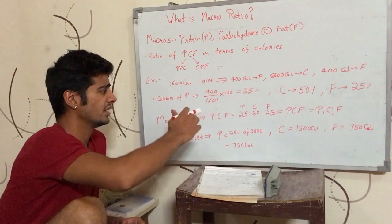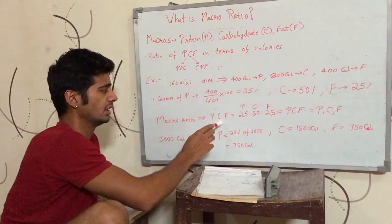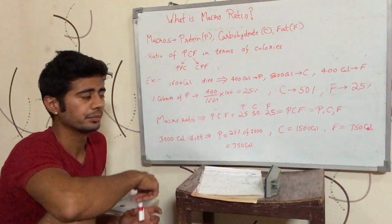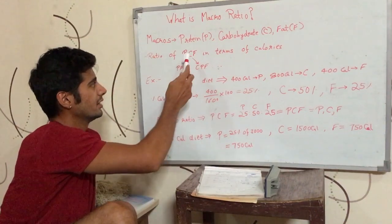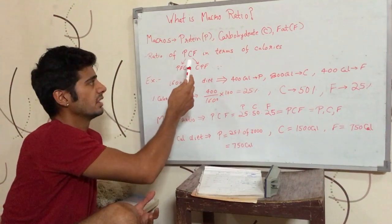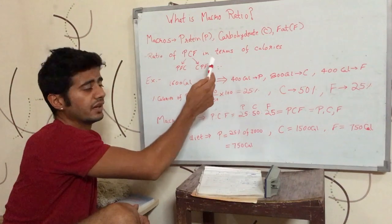Now, you can write it as PCF or PFC, or you can also express the ratio as protein, fat, carbohydrate or carbohydrate protein fat, the way you like.